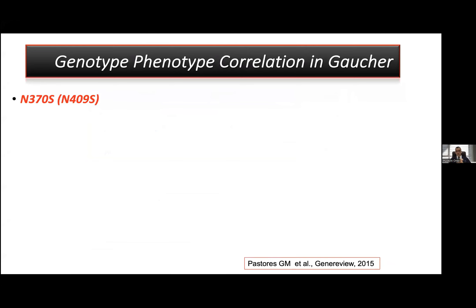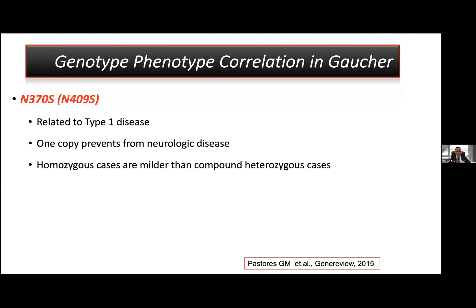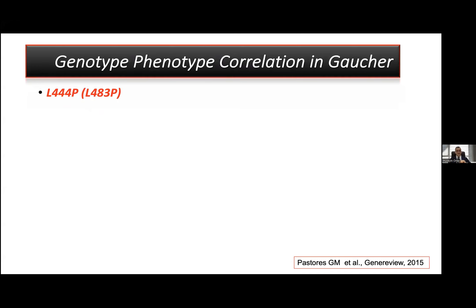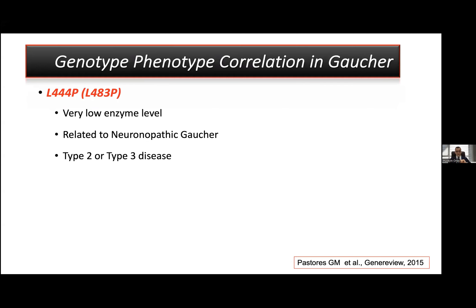Regarding genotype-phenotype correlation in Gaucher disease, the most common mutation seen in Type 1 disease prevents neurologic disease. Homozygous cases are milder than compound heterozygous cases, and we can even see asymptomatic homozygous cases with this variant. The classical variant seen in neuronopathic Gaucher causes very low enzyme levels and can cause Type 2 or Type 3 disease, but some carriers do not develop neuronopathic Gaucher, again suggesting modifier factors.